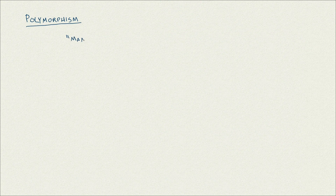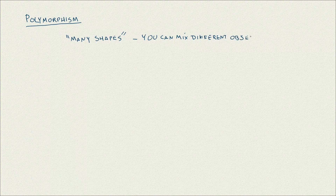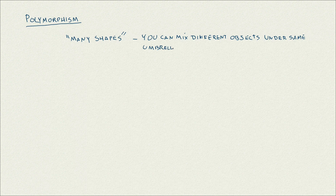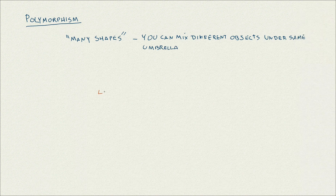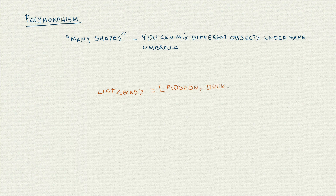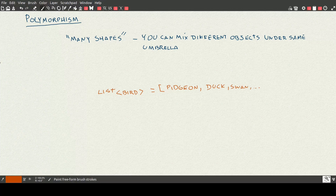Finally, we get to polymorphism. Polymorphism literally means many shapes. So you can mix different types of objects under the same umbrella. For example, let's say we want to have a list of birds. You could have a class birds, where you could have different subclasses like duck, pigeon, or swan. You can group them all together because they share common traits into the same list. That's basically what polymorphism is.